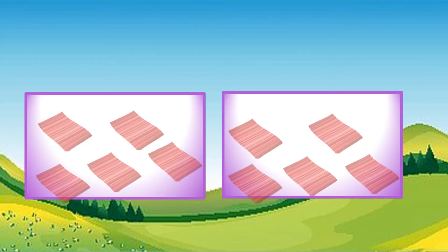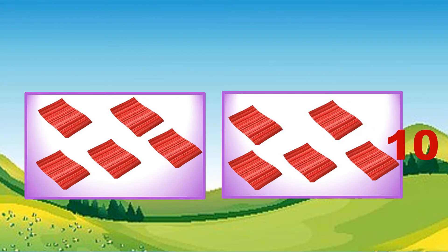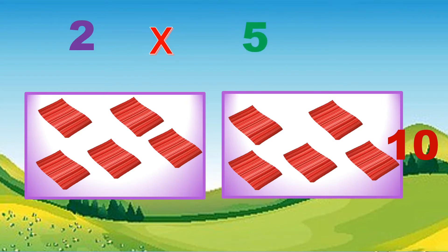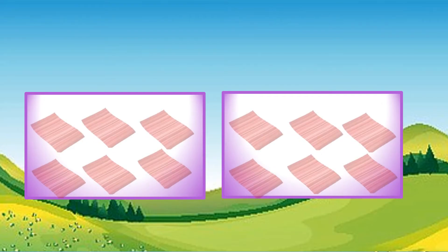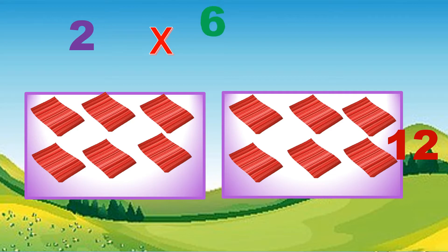Two sets of five. Skip counting: five, ten. Two times five equals ten. Two sets of six. Skip counting: six, twelve. Two times six equals twelve.